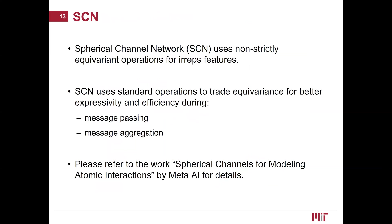In addition to Equiformer, we also consider Spherical Channel Networks (SCN), proposed by Meta AI. Instead of using equivariant operations, SCN uses non-strictly equivariant operations, and it has demonstrated impressive results on the Open Catalyst 2020 dataset. Roughly speaking, SCN uses standard operations to trade equivariance for better expressivity and efficiency during both message passing and message aggregation. Please refer to the work Spherical Channels for Modeling Atomic Interactions by Meta AI for further details.